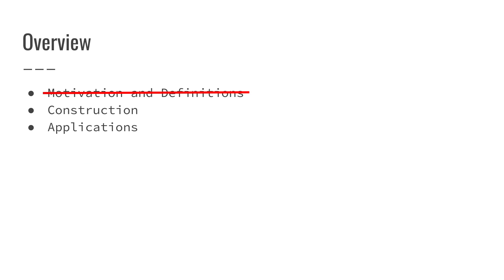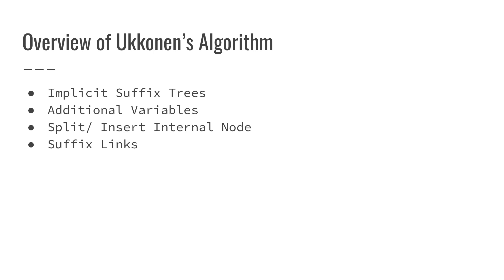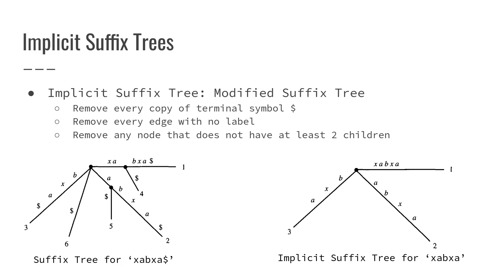Moving on from motivation and definitions, we'll now discuss the construction. We are interested in a linear time construction, so we will look at Ukonen's algorithm. The overview is: we'll first talk about implicit suffix trees, then talk about some additional variables necessary for this algorithm, then discuss what happens when we split a path and insert an internal node, and finally talk about the idea of suffix links. We'll end with an illustration of Ukonen's algorithm.